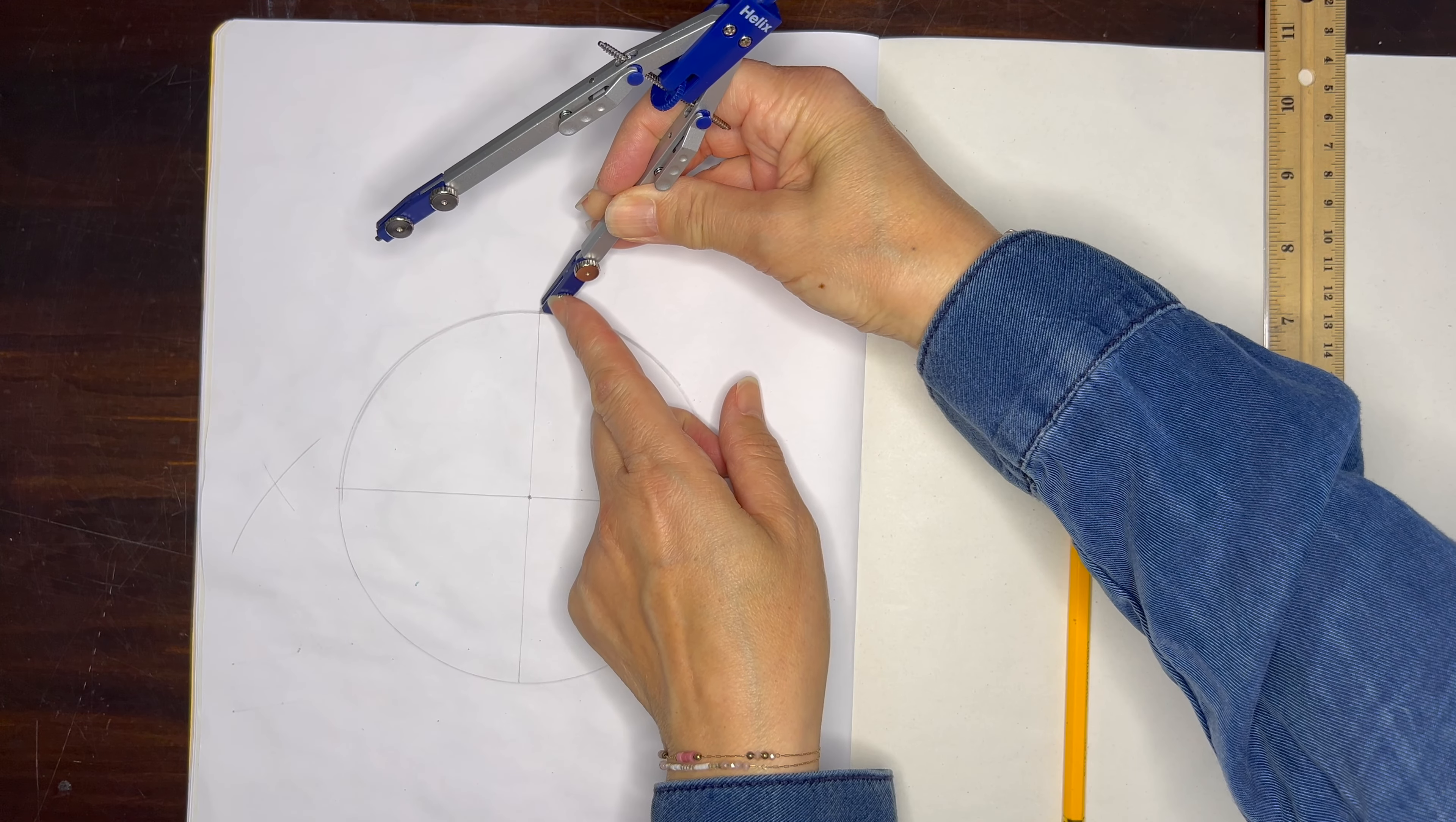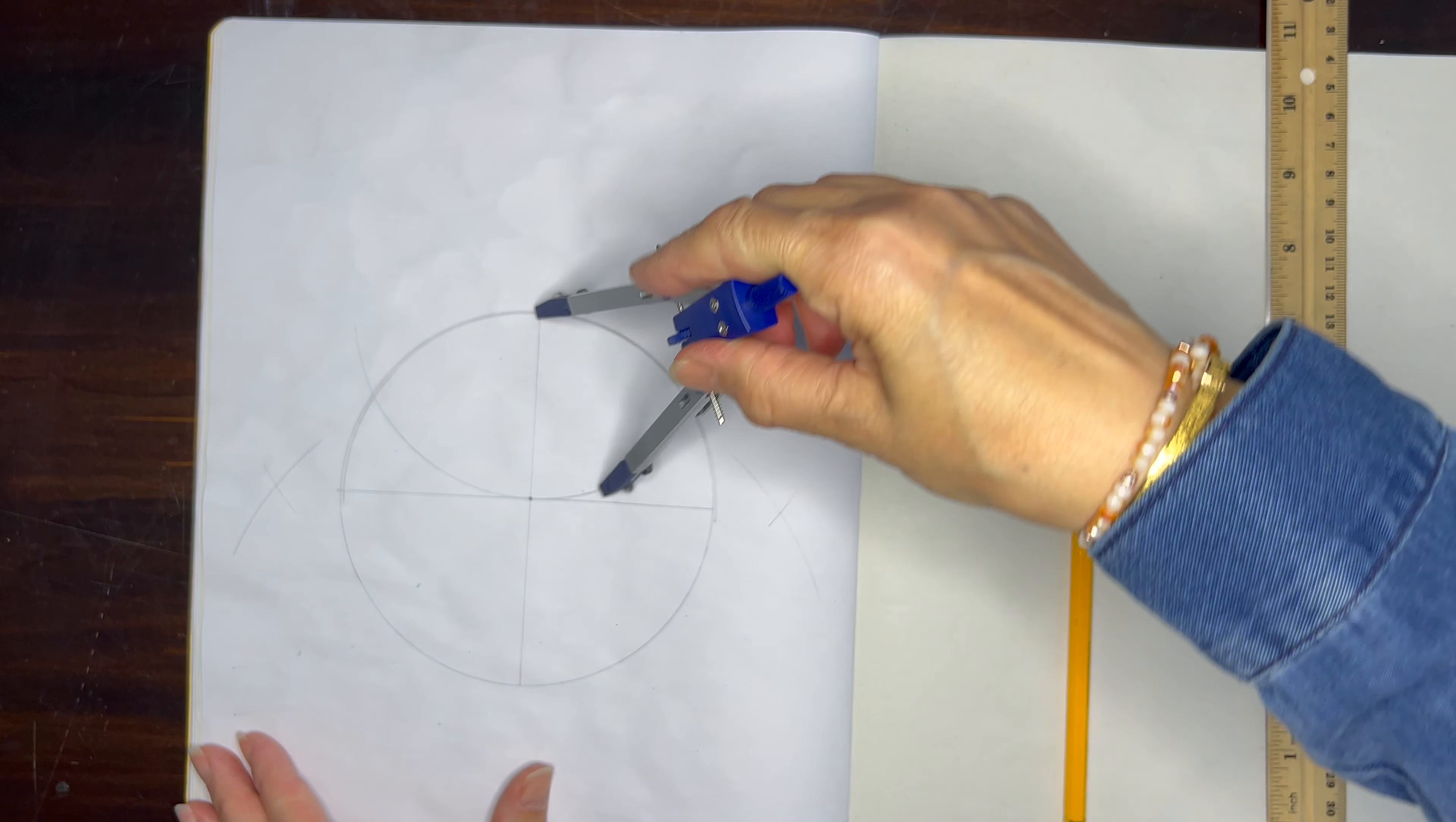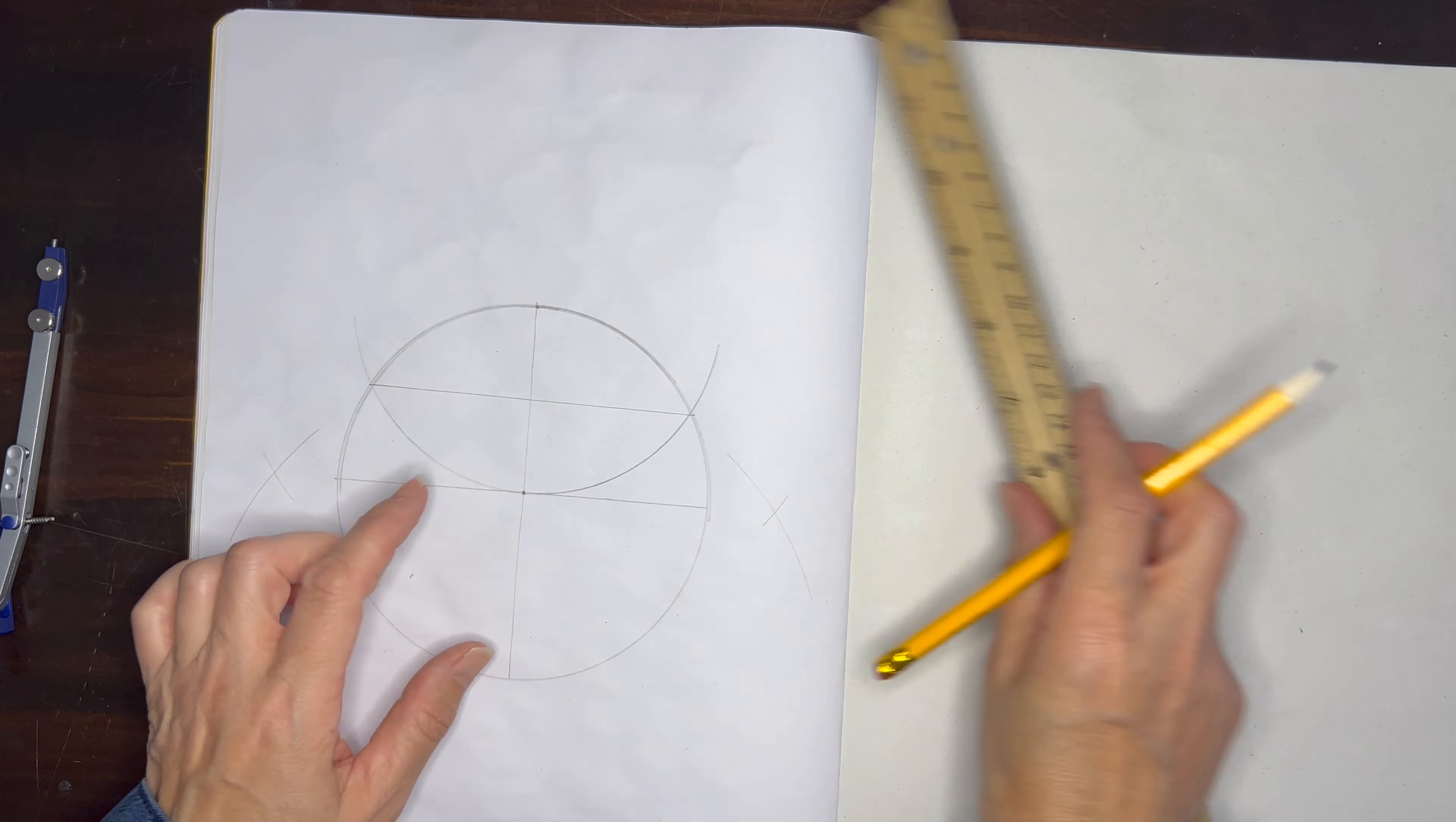We're going to place our compass at the top of the diameter and we're going to swing an arc from the center of the circle so that it bisects both sides of our circle. So you can see we have two arcs that we're going to connect with our straight edge. We're taking the ruler, placing it between those two arcs and drawing a line, and that bisects our radius.